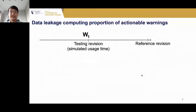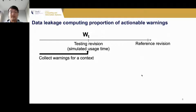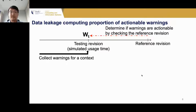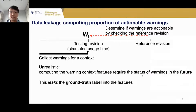In our analysis of the data, we find an issue of data leakage when computing the proportion of actionable warnings. To determine the proportion of actionable warnings, we need to know the number of actionable warnings in the context, which requires comparing against the reference revision — the same procedure used to determine the ground truth label of the warning. This leaks the ground truth label into the features. This is unrealistic because computing these features would require knowing the status of warnings in the future, which would not be available if the tool were used in practice.